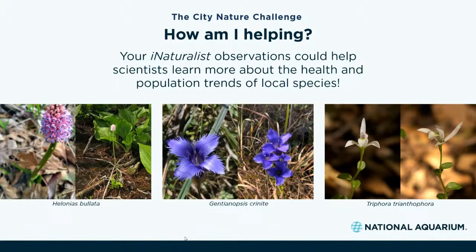Those three plants on the screen are actually three endangered or vulnerable species that live right here in Maryland that have been documented on iNaturalist. In total, over 73 different threatened species in Maryland have been identified on iNaturalist, and over 2,000 different plant species have been identified in the state already — but we're still hoping to add some more.